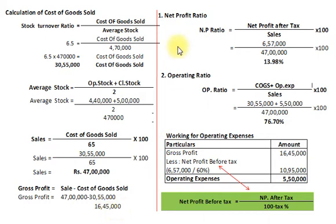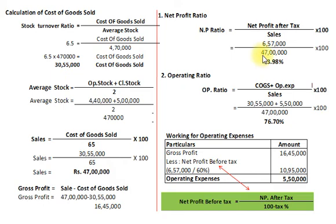Now we will calculate the first ratio, that is net profit ratio. The formula is net profit after tax divided by sales multiplied by 100. Net profit after tax is Rs. 6,57,000 divided by sales Rs. 47,00,000, multiplied by 100. So our net profit ratio amounts to 13.98%.